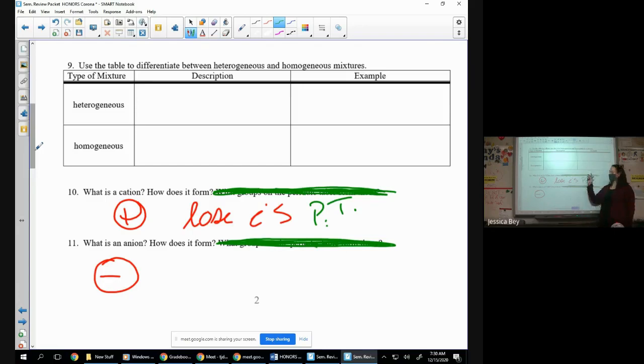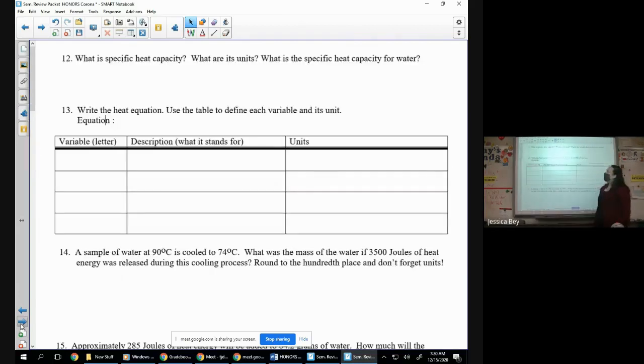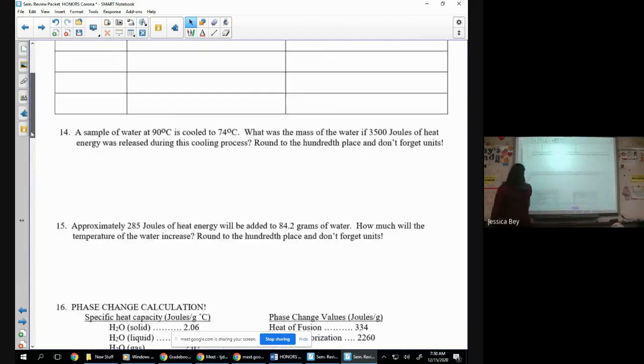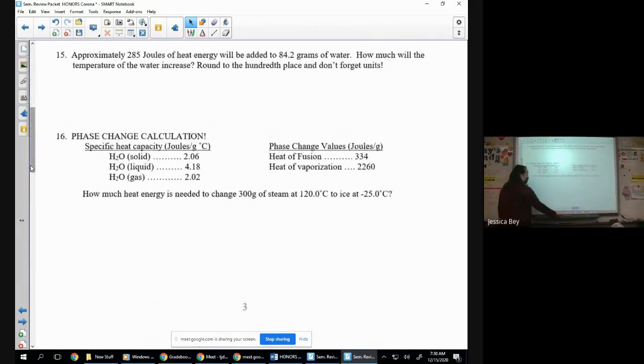So a cation is a positive ion, it forms by losing an electron. An anion is a negative ion, it forms by gaining electrons. You're going to be moving into a little bit of thermal chemistry here. Specific heat capacity, Q equals mc delta T, a couple easy Q equals mc delta T.